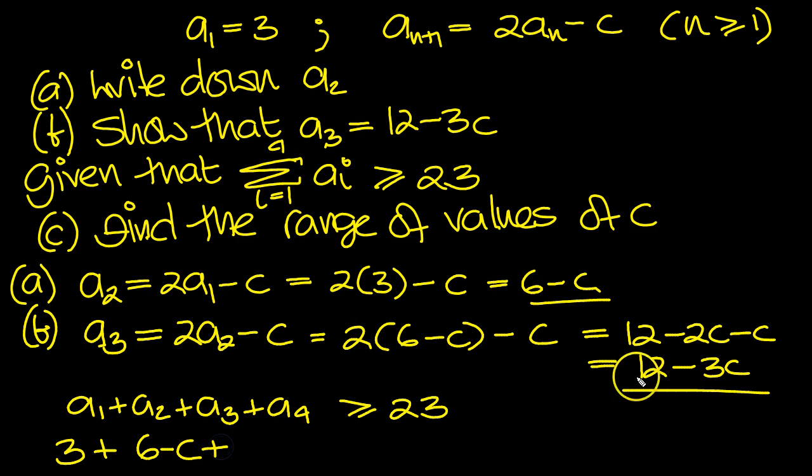plus a3, which is 12 minus 3c, plus a4. Now a4, using the formula here, will be 2a3 minus c, and a3 was equal to 12 minus 3c.